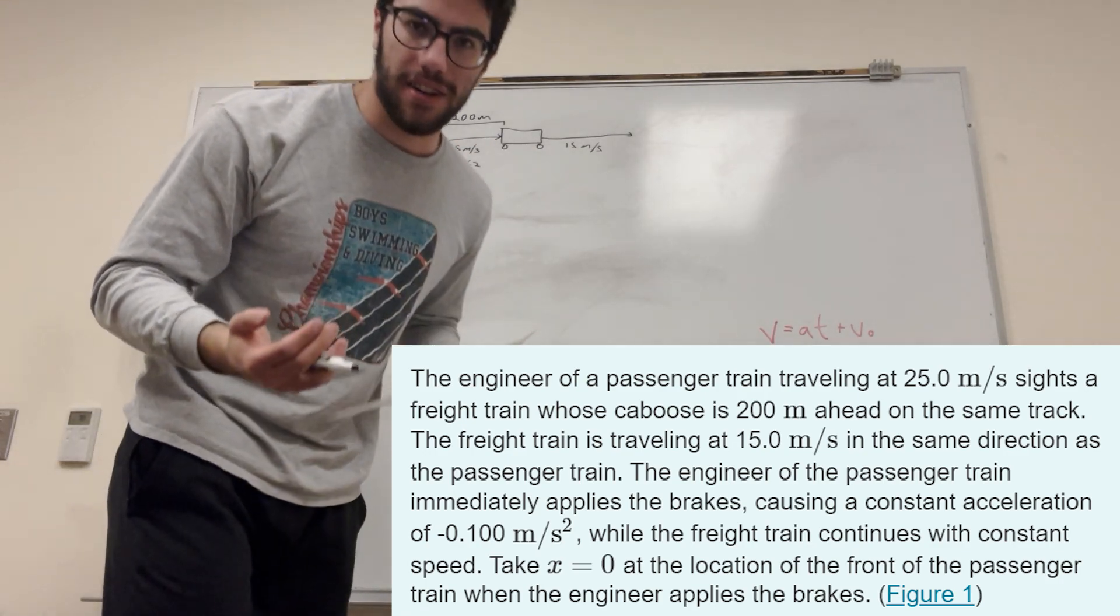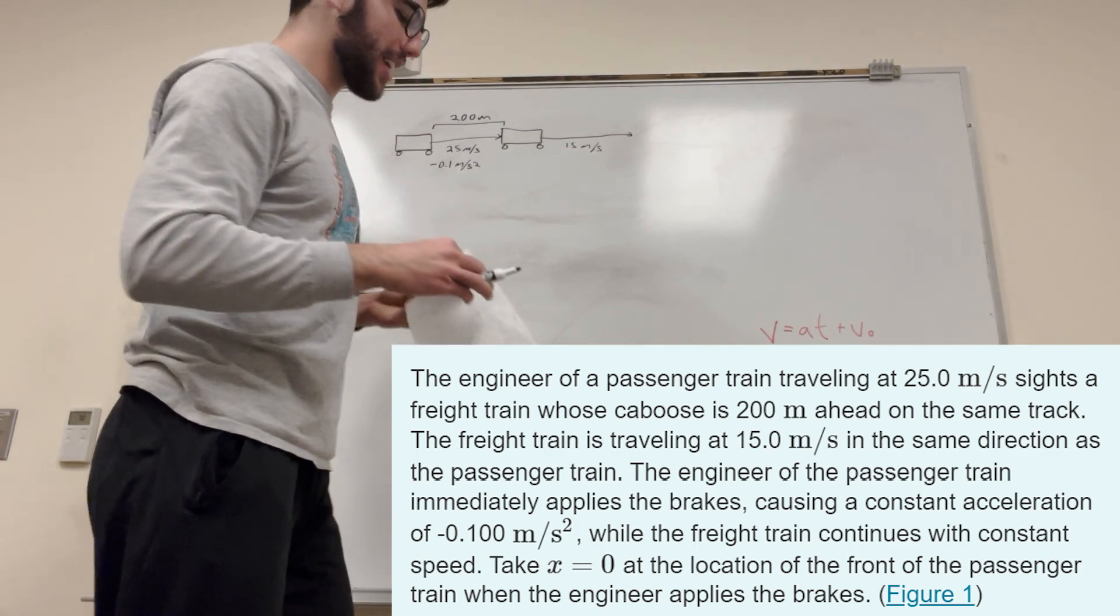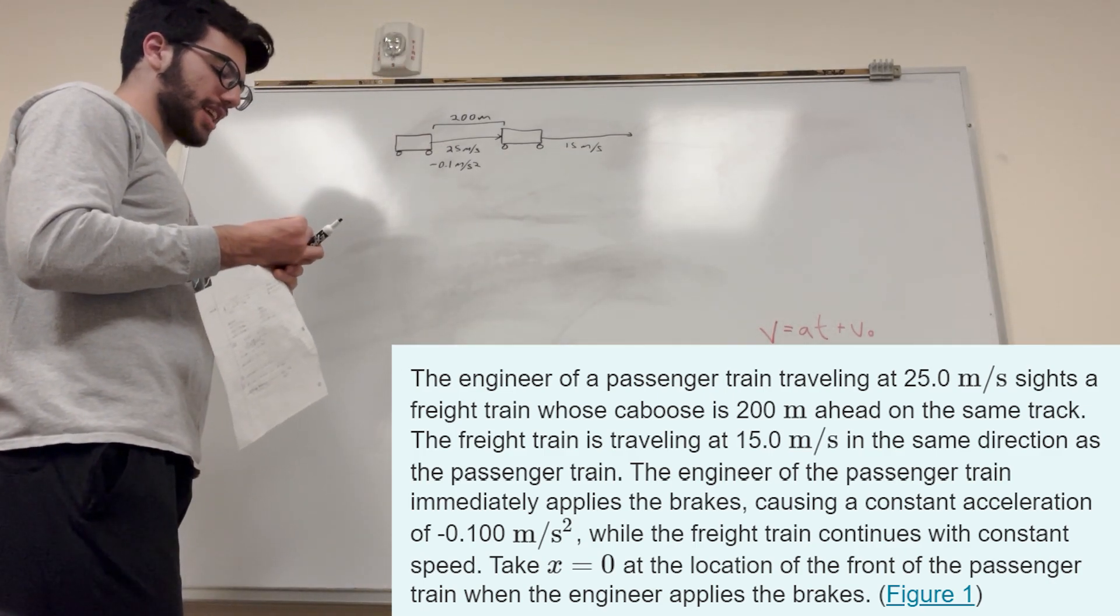But this train is also decelerating at negative 0.1 meters a second squared. Alright, and we want to know, are they going to run into each other? How are we going to do this? Well, let's write out the equations that we know.